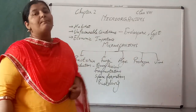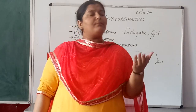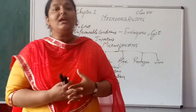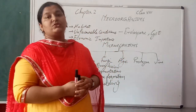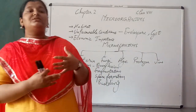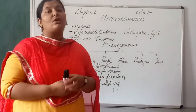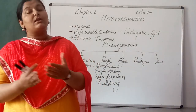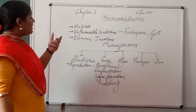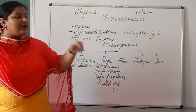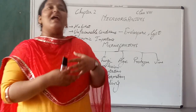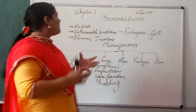One simple example is curd that you probably eat every day. Curd is actually the result of bacteria multiplication — Lactobacillus bacteria that are present in air, soil, the body, food, and almost everywhere. So micro-organisms have a very wide range of habitat.